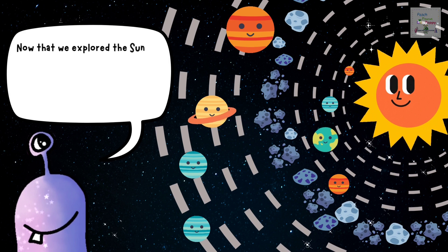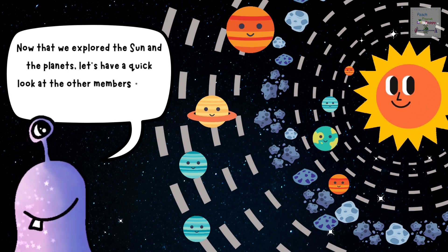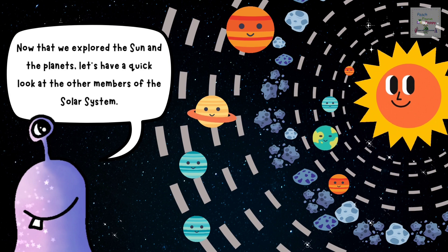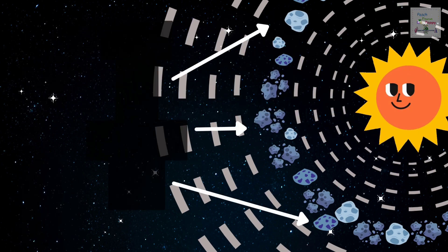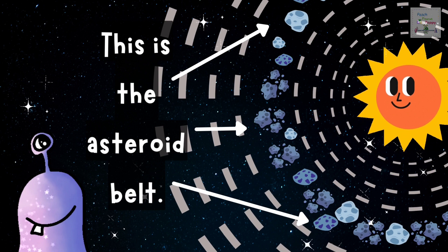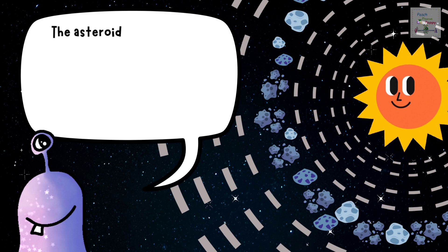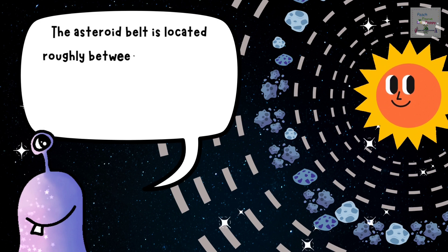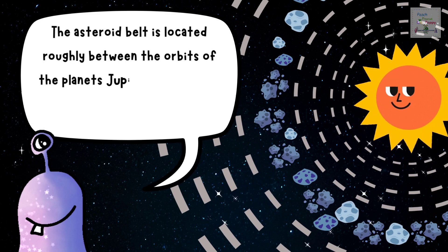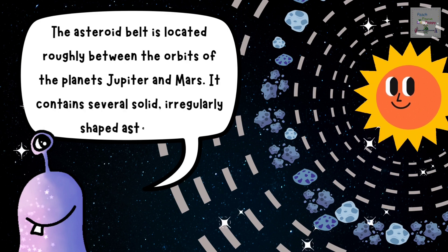Now that we explored the Sun and the planets, let's have a quick look at the other members of the solar system. This is the asteroid belt. The asteroid belt is located roughly between the orbits of the planets Jupiter and Mars. It contains several solid, irregularly shaped asteroids.